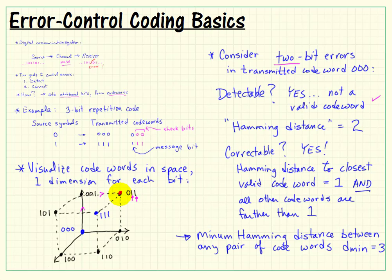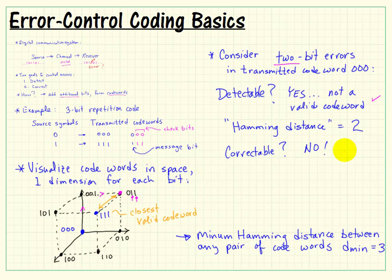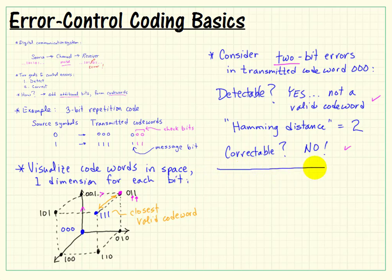Is that a correctable situation? We see that it's actually, the specific value is actually closest to the code word 111. So without further information, we received the value 011. The closest valid code word is 111, and that's an incorrect result. So we would say a 2-bit error is not correctable.